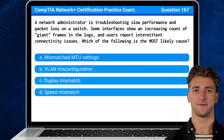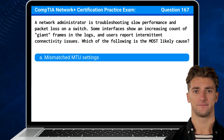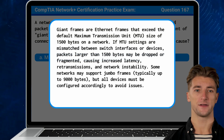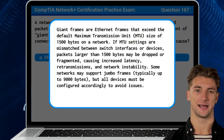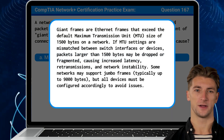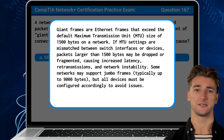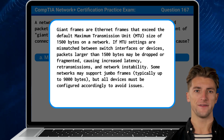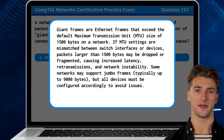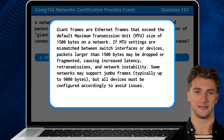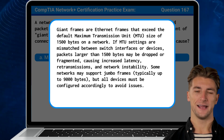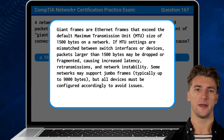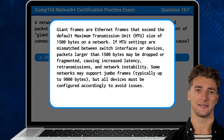The answer is A: Mismatch MTU settings. Giant frames are Ethernet frames that exceed the default maximum transmission unit size of 1500 bytes on a network. If MTU settings are mismatched between switch interfaces or devices, packets larger than 1500 bytes may be dropped or fragmented, causing increased latency, retransmissions, and network instability. Some networks may support jumbo frames, but all devices must be configured accordingly to avoid issues.